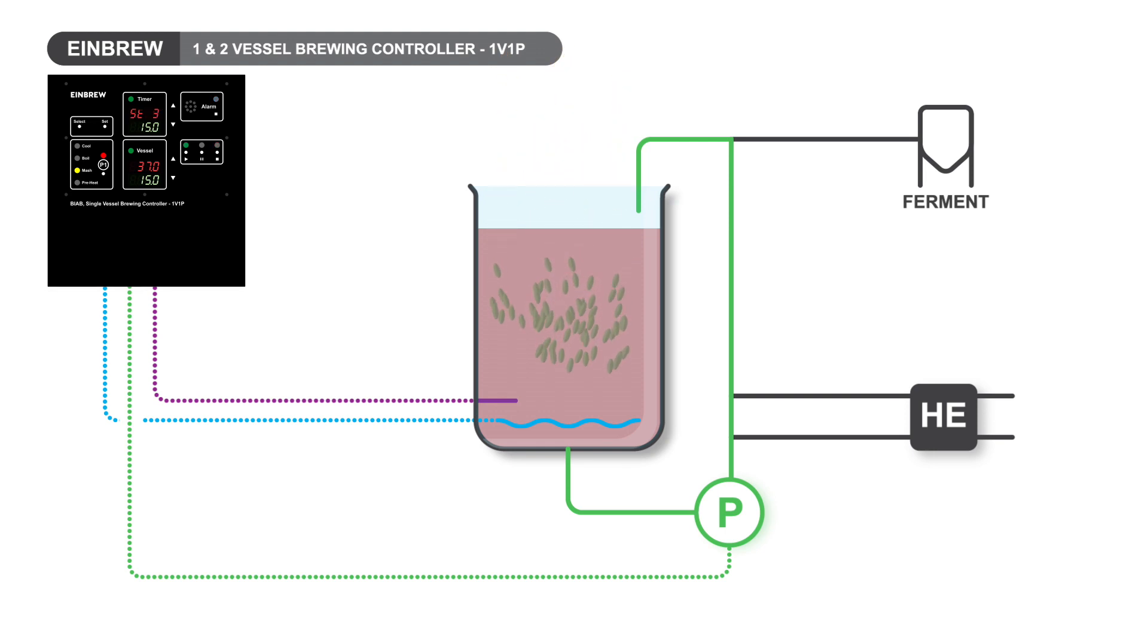The next stage is the first mash step. It will perform this rest without any input from you. It proceeds to subsequent rests, eventually coming to the mash-out temperature when it will alarm for you to sparge and boil.